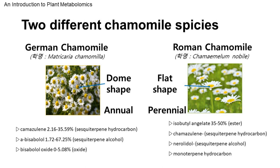Our aim is to build a model that can tell these two types of chamomile apart. Even though German and Roman chamomile look similar, they have distinct uses and volatile organic compound profiles. German chamomile usually has a round flower center, while Roman chamomile tends to be flatter with different petal angles. However, these visual differences aren't always clear, especially for those unfamiliar with them or in less than ideal conditions — that's why we need a more scientific method for classification.